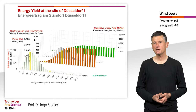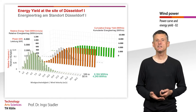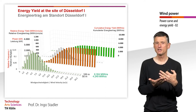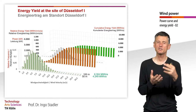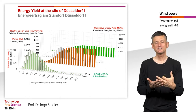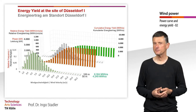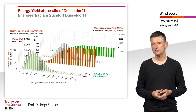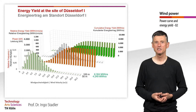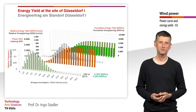So what happens when we double the height to 100 meters at this inland site? We get a completely different curve — unlike the coastline where all curves were close together, here at the inland site there is a significant difference, with cumulative energy yield jumping from 4,000 to more than 6,000 MWh per year.